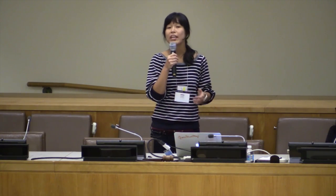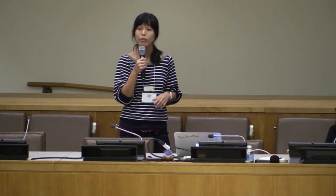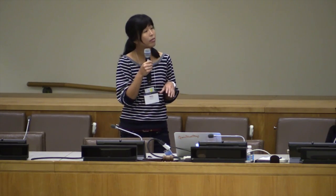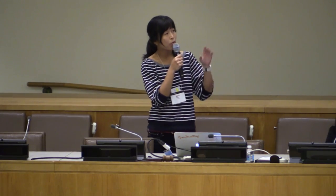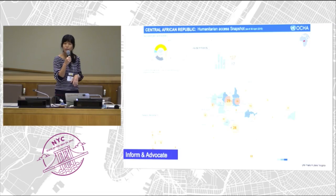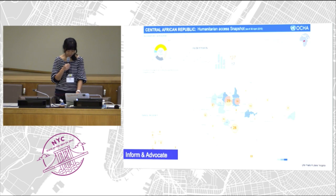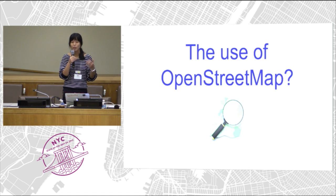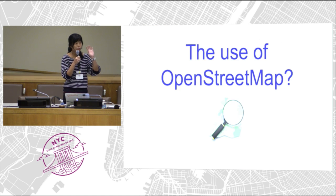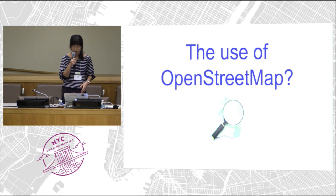We produce a lot of maps to inform and to advocate. This is an example of a map produced by our field colleagues in Central African Republic, showing the current situation about humanitarian access in the country. Today, we'd like to present you about the use of OpenStreetMap in our work.